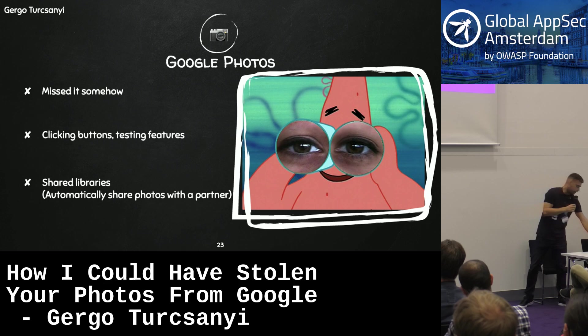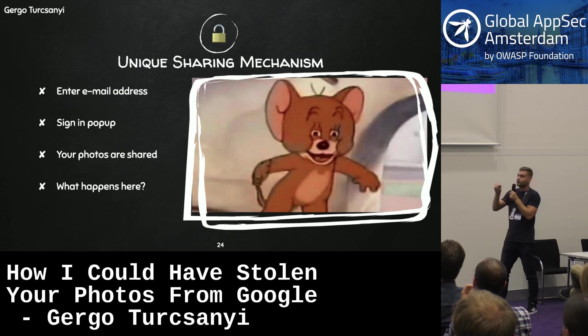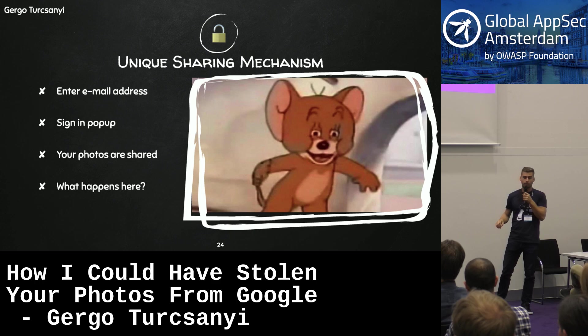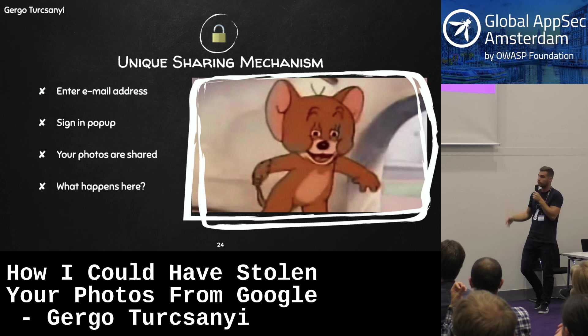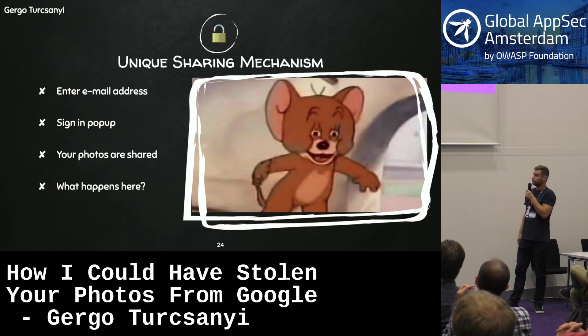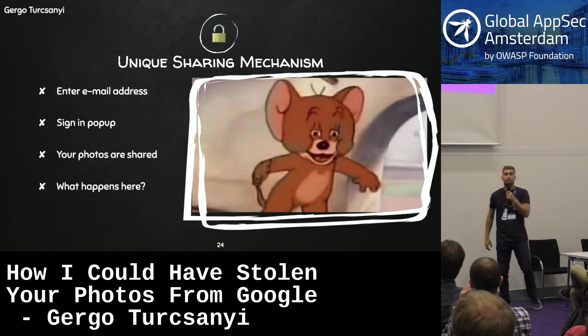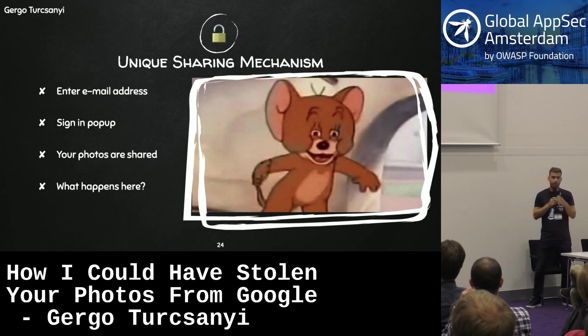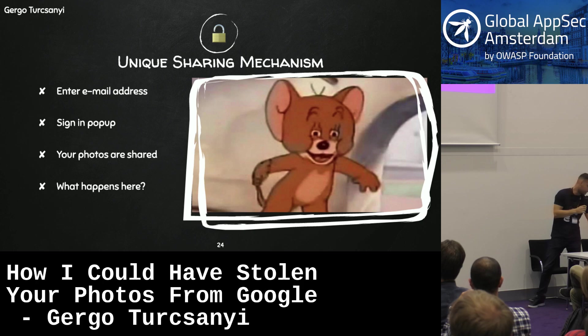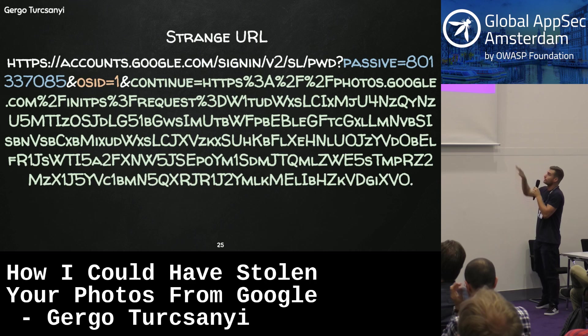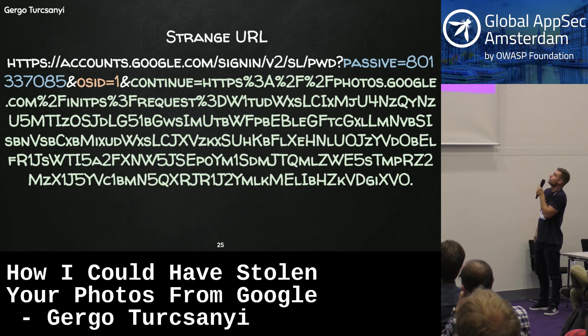It works with a partner account like this: you enter the email address of your partner and click the share button. There will be a pop-up window with a legit Google login screen, and when you log in, your photos are instantly shared. All you see is a success message and a close window button. It looked really weird to me. I couldn't see the whole URL because the window was really small, so I copied it and it looked like this. The first two parameters are just random numbers, not really interesting. But the third one - the 'continue' parameter - is clearly a URL.